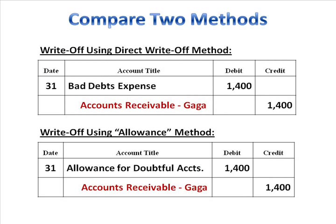Let's contrast those two. On the screen you should see both entries. Note that both entries credit accounts receivable. The difference is that under the direct write-off method, you debit bad debts expense to write off the account — that's how it gets its name. We call it the direct write-off method because you debit the expense directly, with no allowance account. Under the allowance method, you debit the allowance account when you write off an account. I hope you have those two sorted out.